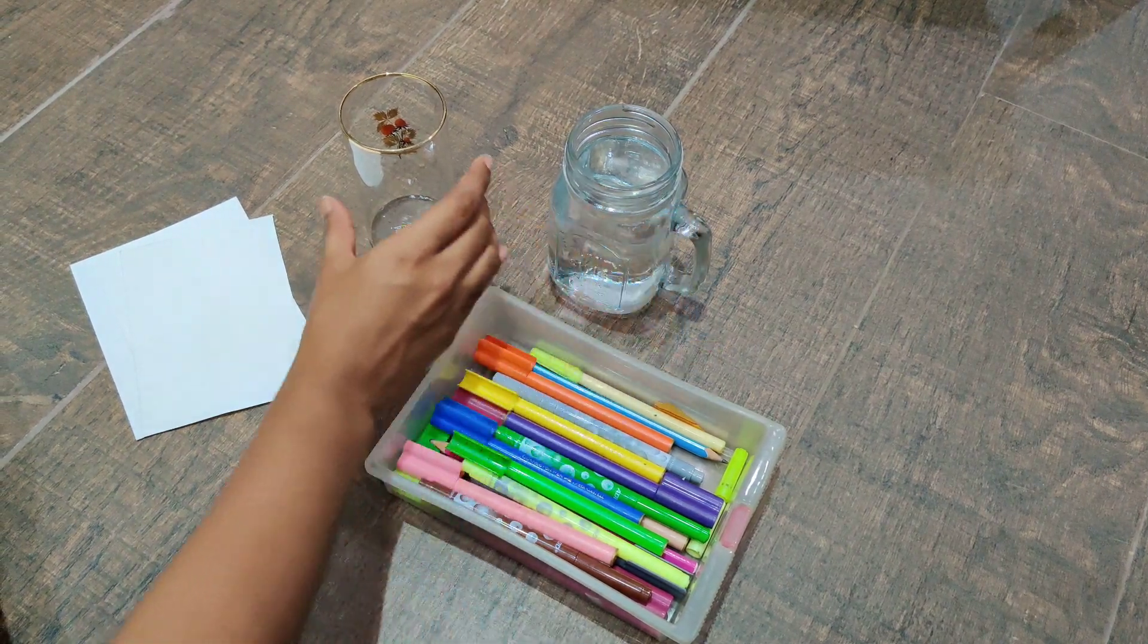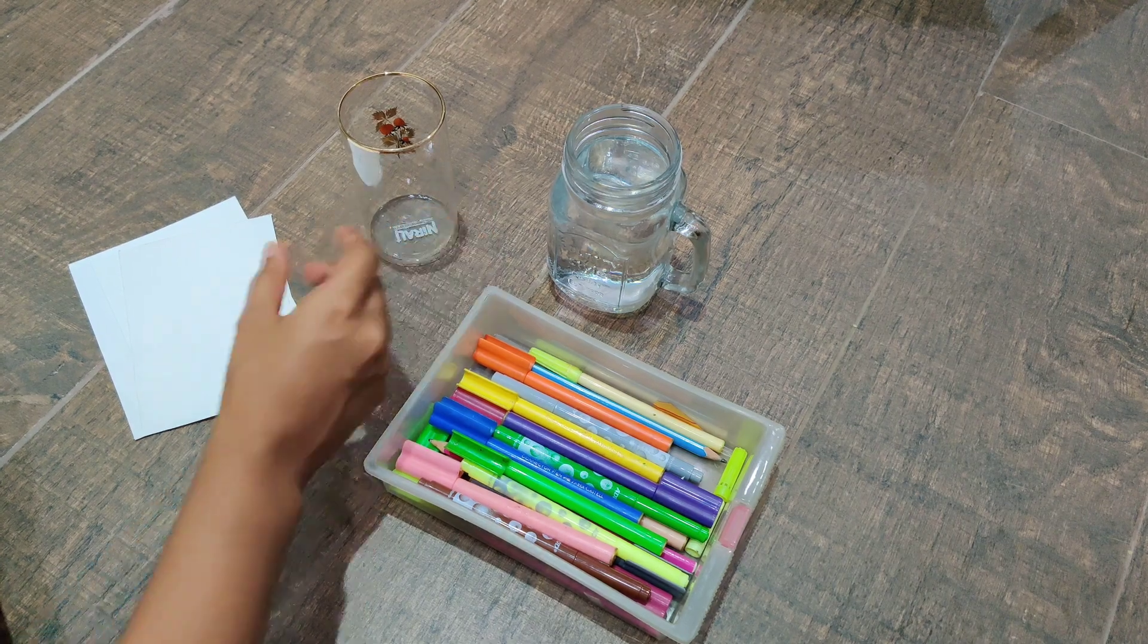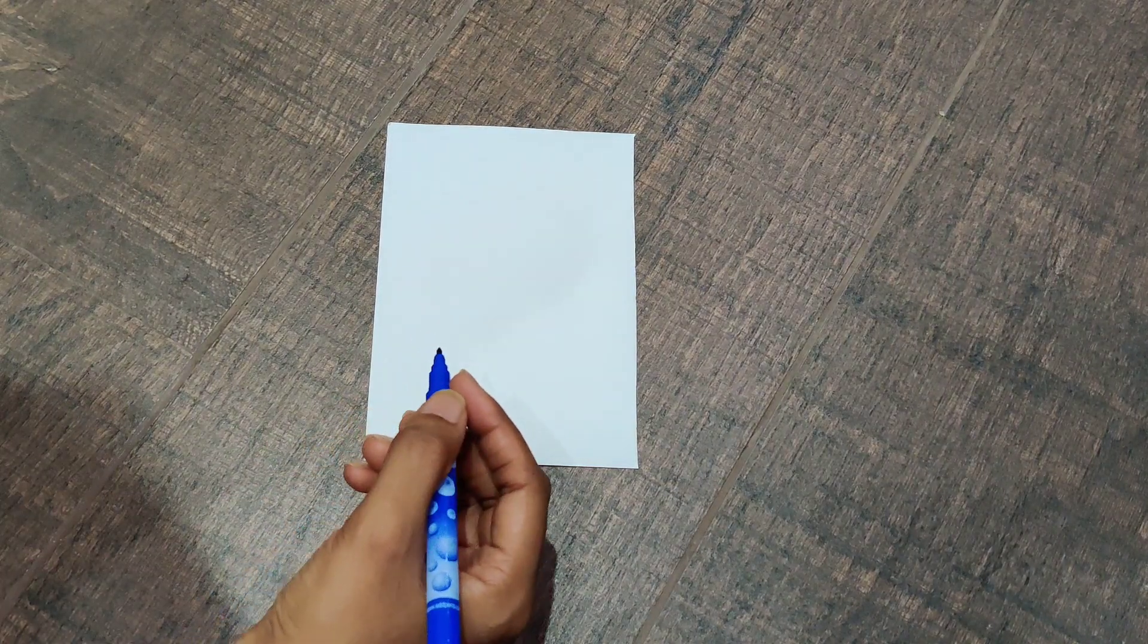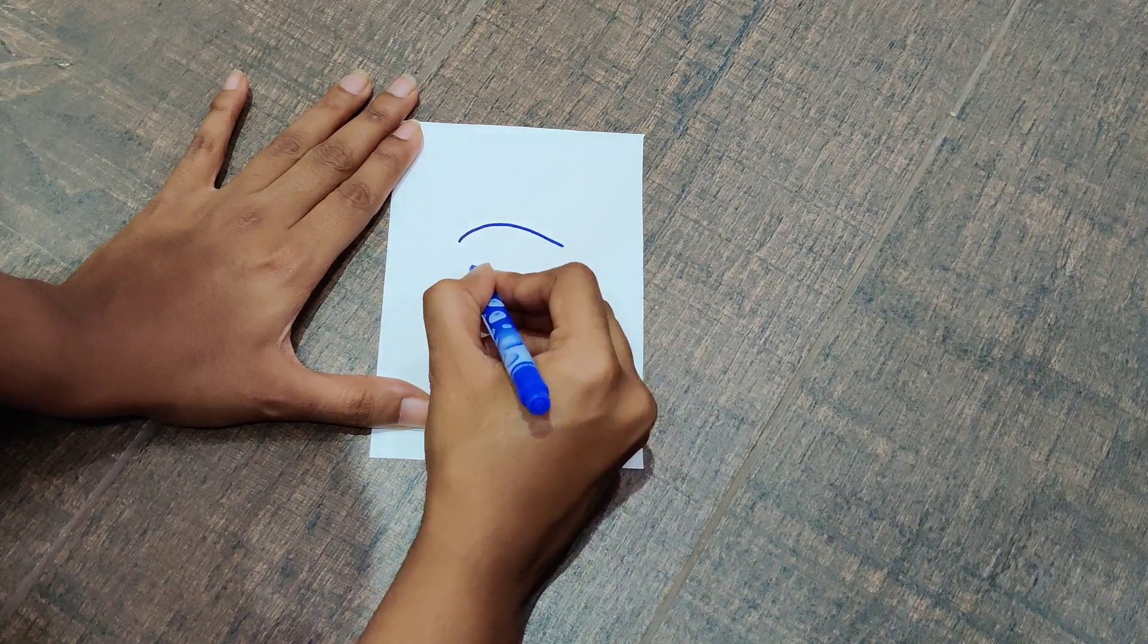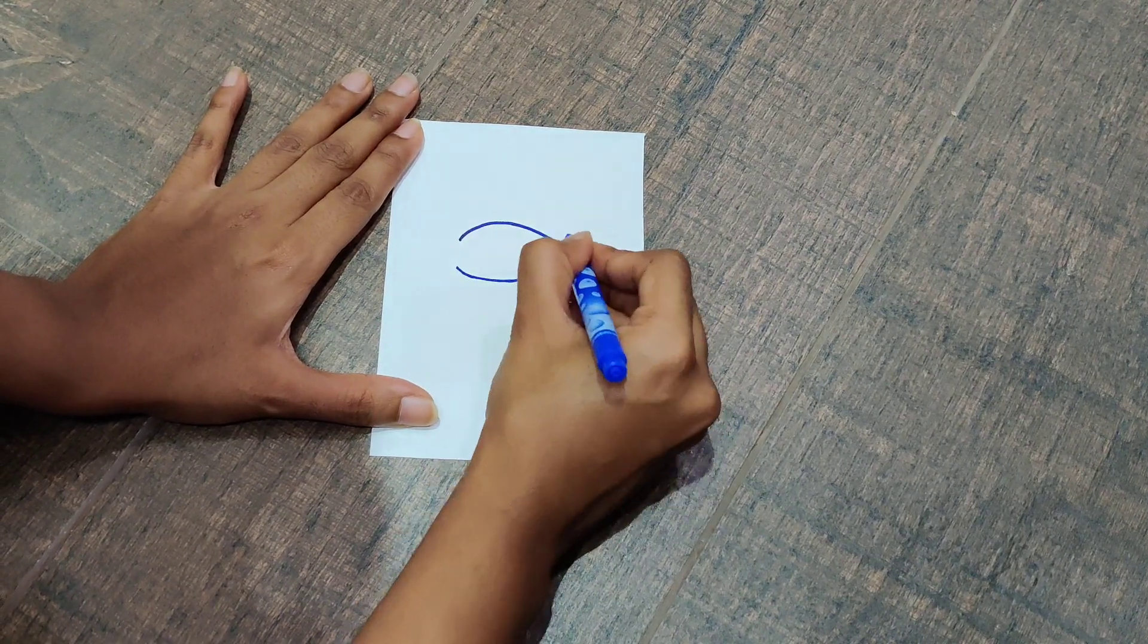Now we'll start to draw on a piece of paper. I'm going to draw a fish, two fishes. You can draw anything that you like. If you want, you can even start by drawing the fishes with a pencil first and then trace it with a sketch pen.